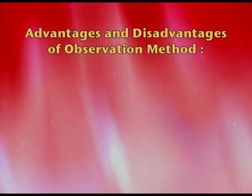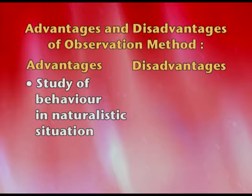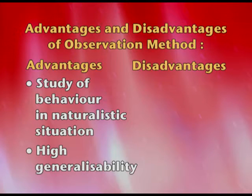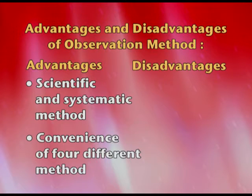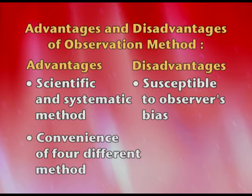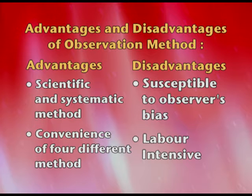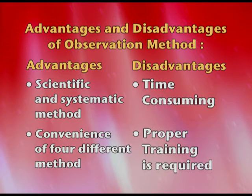We have the advantages and disadvantages of the observation method. Observation is a very direct method — we study behavior in the natural setting, which is the most important advantage. It can be generalized to any setting because we are using a natural setup, and it is a recognized scientific method. For disadvantages: it is susceptible to observer's bias — a lot of training is required to groom the observer on what, how, and when to observe. Personal bias will come in because the researcher is human, not a machine. It is also very labor intensive — a lot of money, time, and training is involved.